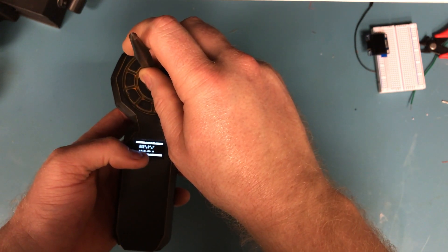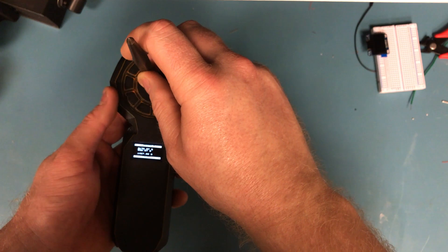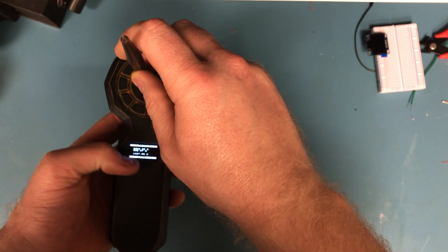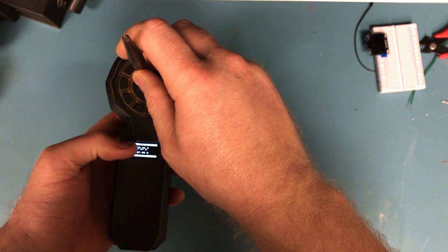And the second reading you see is a reading 3/8 of an inch away from the magnet. And the last reading you see is an average of the two.